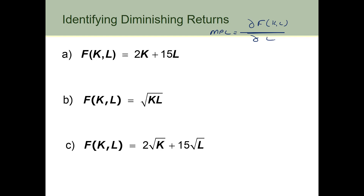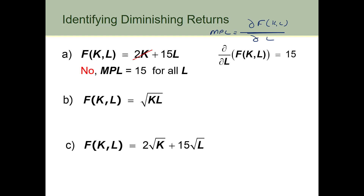We treat the first term as a constant, so the first part of the derivative is zero. The marginal product of labour, ∂f/∂L, is equal to 15. So in this first case we don't have diminishing returns — the marginal product of labour is constant for all values of L.